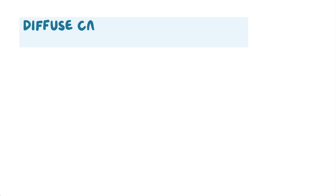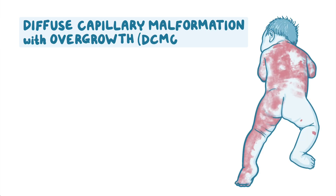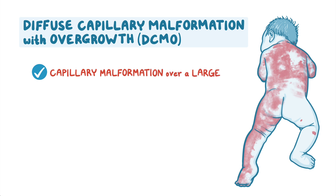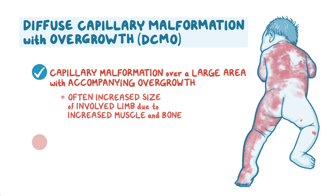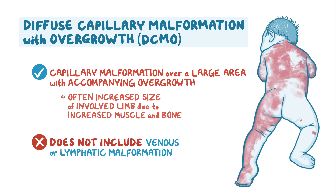Diffuse capillary malformation with overgrowth, or DCMO, involves capillary malformation over a large area of the body with accompanying overgrowth — often increased size of an involved limb due to increased muscle and bone — but does not include venous or lymphatic malformation.